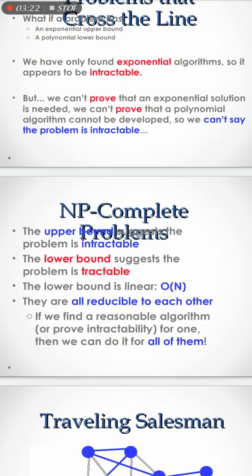P is the set of all decision problems which can be solved in polynomial time by a deterministic Turing machine. Since it can be solved in polynomial time, it can also be verified in polynomial time. Therefore, P is a subset of NP. P can be solved in polynomial time, P can be verified in polynomial time, and P is always a subset of NP — meaning if we solve NP, P will also be solved since P is a subset of NP.